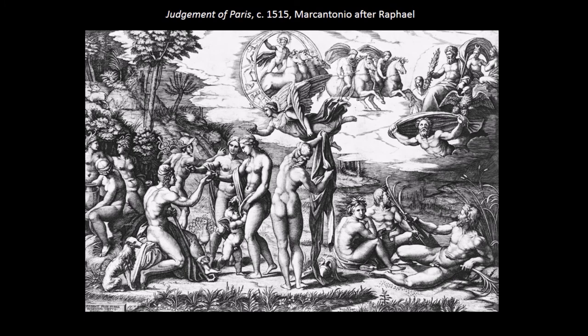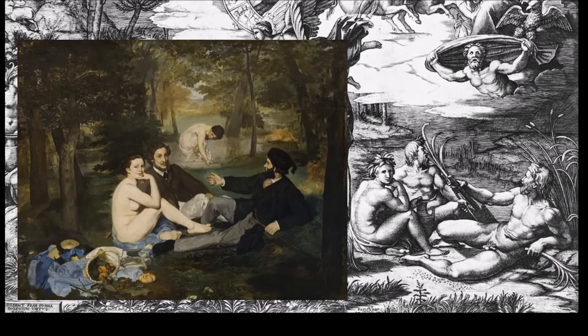Manet is a very astute person in terms of art history and very well studied. A lot of his compositions are updates of classical compositions. There is a classical print based on Raphael's Judgment of Paris, and if we look in the bottom right corner, we can see almost the exact scene we have from Luncheon on the Grass. What Manet is really doing is changing the characters out and making them into modern adaptations of what you would see around Paris rather than a mythological study. This point was actually lost on a tremendous number of people who viewed it for the first time.